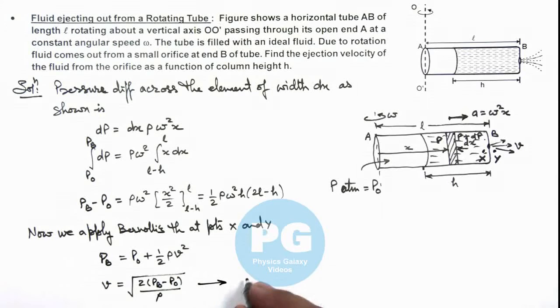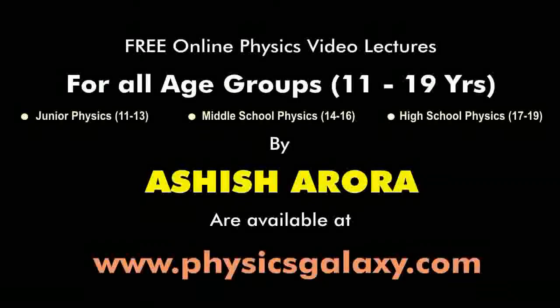So this will give us the value of v is equal to, when you substitute this value over here, this will give us v equals omega h times the square root of 2L by h minus 1. That will be the result of this problem. Thank you.